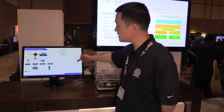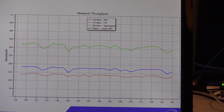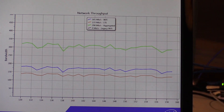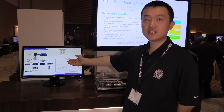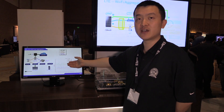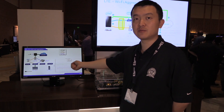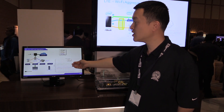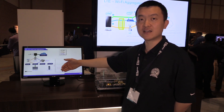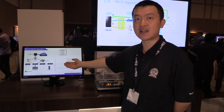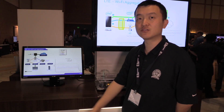We have the aggregated throughput, the LTE throughput, and the Wi-Fi throughput. This technology allows us to integrate both 3GPP technology and non-3GPP technology, giving the base station access to all the unlicensed band and the licensed band to get much higher end-to-end throughput.